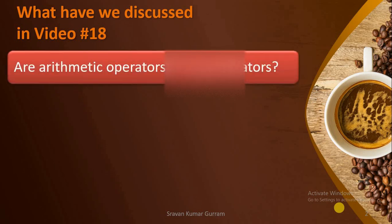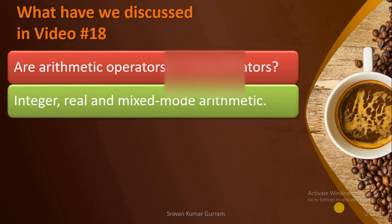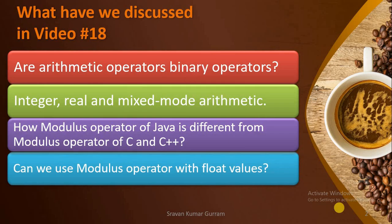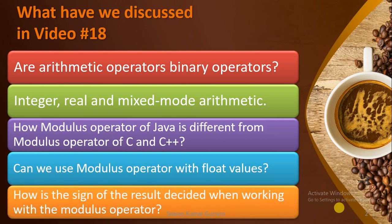Before starting today's session, let us recall what we discussed in our last video. We covered arithmetic operators, binary operators, integer, real and mixed mode arithmetic, how the modulus operator in Java is different from C and C++, whether we can use the modulus operator with float values, and how the sign of the result is decided when working with the modulus operator. We discussed all these parts in detail in video 18. If you have not watched that, please watch it — the link is given in the description box.